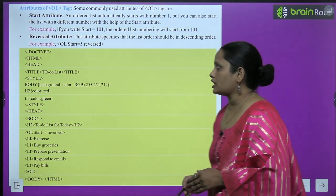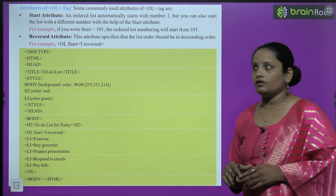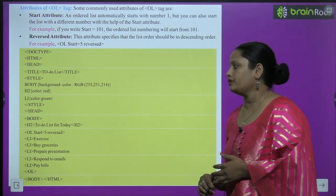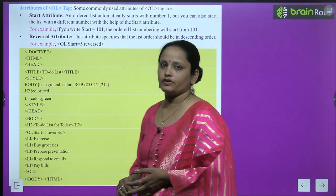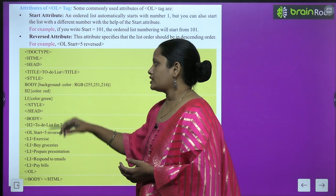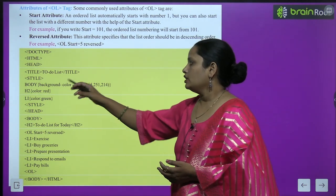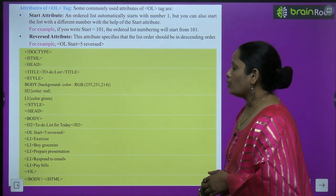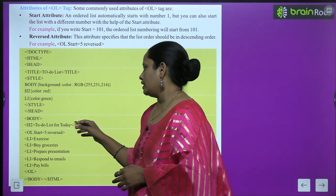Now there is the reverse attribute. What is the reverse attribute? This attribute specifies that the list order should be in decreasing order. So the reverse attribute says to write whatever list there is in decreasing order. For example, if we write ol start='5' reverse, then 5 numbers in reverse will appear. You can see ol start='5' reverse is written, so the list will count down from 5. We need to type HTML, then heading, then title 'To Do List', then style with the specified background and highlight colors.